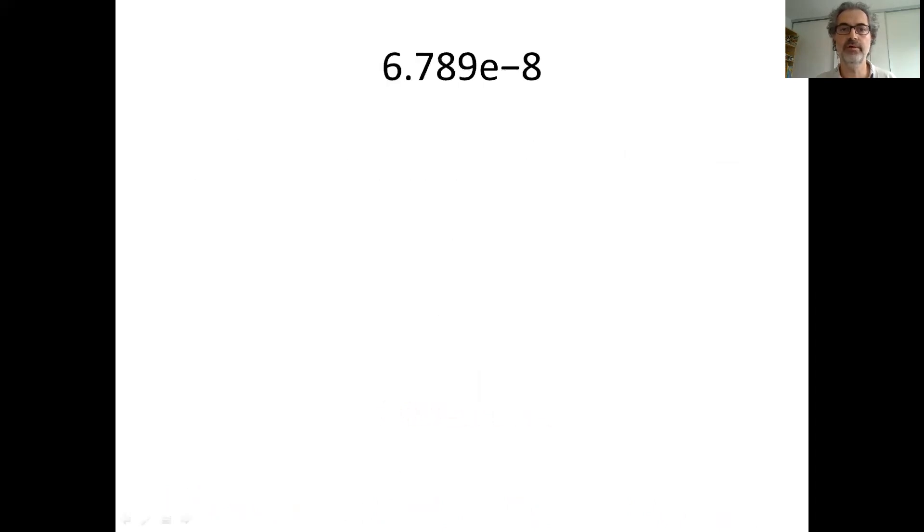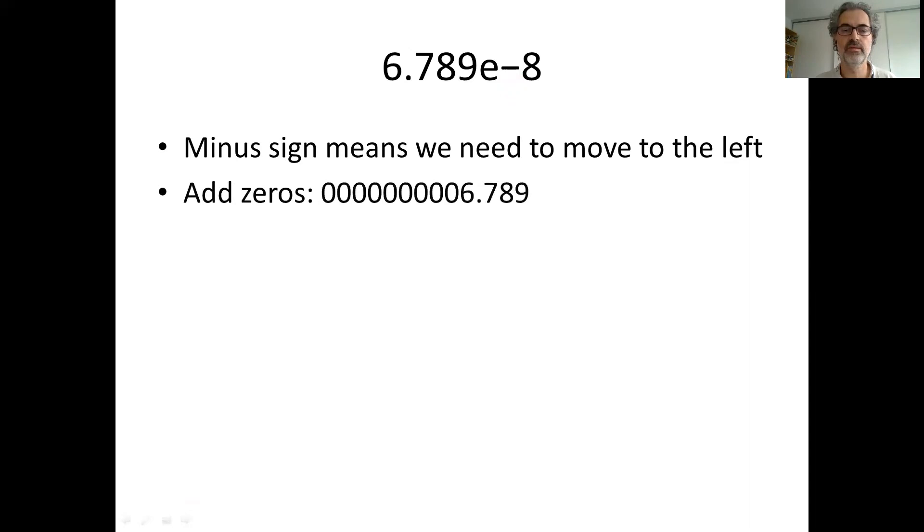What about this number? Let's follow the same steps. First of all, we see there is a minus sign this time, so we have to move the decimal point to the left. So we add a bunch of zeros to the left of our number without changing it, and then we move the decimal point.